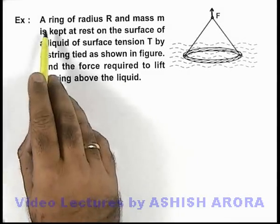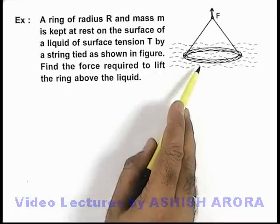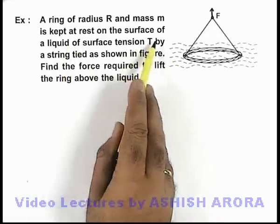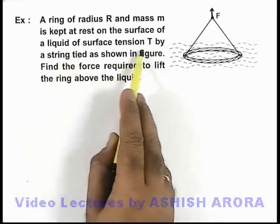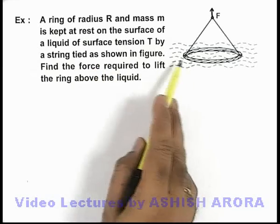In this example, we are given that a ring of radius R and mass m is kept at rest on the surface of a liquid of surface tension T by a string tied as shown in the figure.